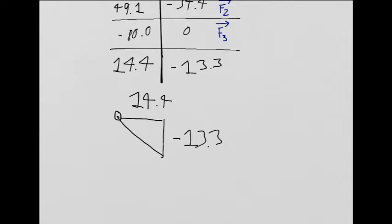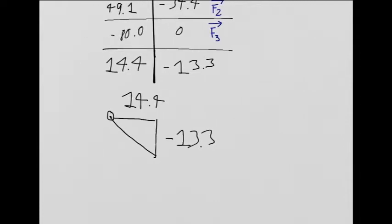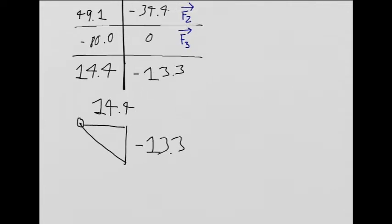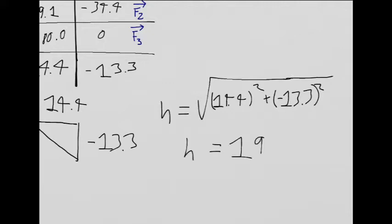Let's find the hypotenuse. I'm just going to put H for hypotenuse is square root of 14.4 squared plus negative 13.3 squared, and that comes out to about 19.6.